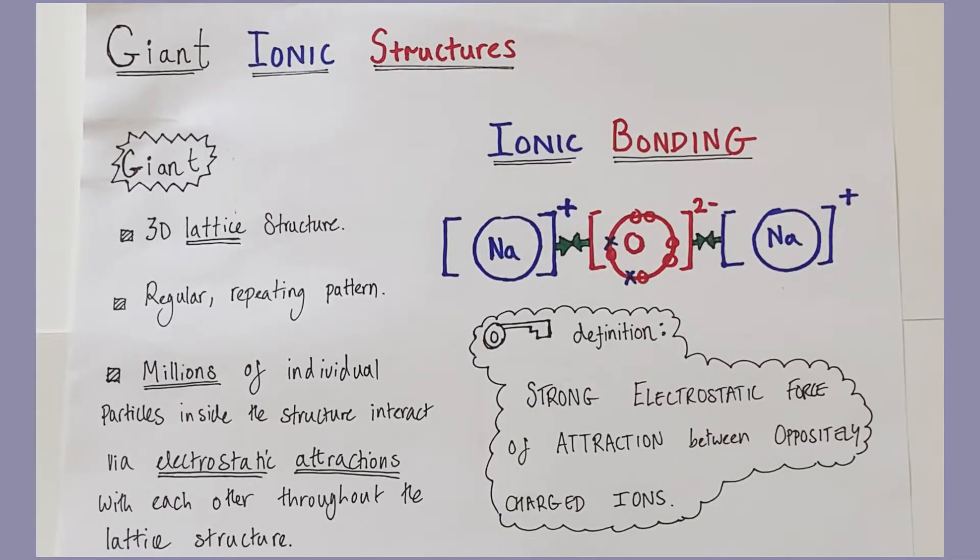This video is going to look at giant ionic structures and the key physical properties of giant ionic structures. A giant structure is essentially a 3D lattice, a structure which has a very regular repeating pattern of millions of individual particles.